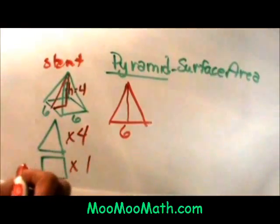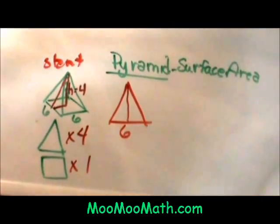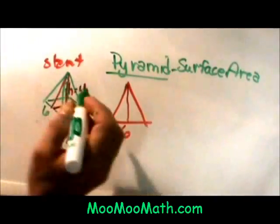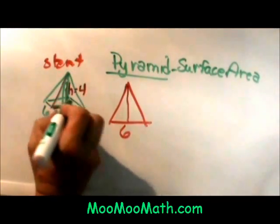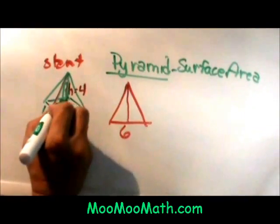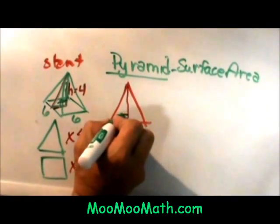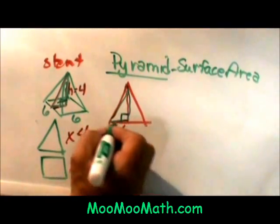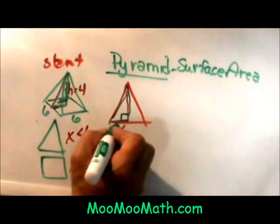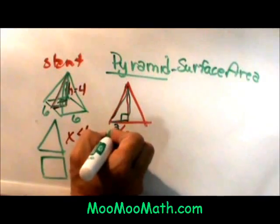To find the slant height I am going to use the Pythagorean theorem. Inside of this pyramid I have a right triangle. Right here is my right angle and it actually is half of this face. So if this is half of the face, if the whole side is six, this part is three.